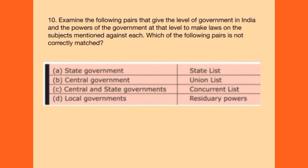Next question: which of the following pairs of level of government and its power to make laws is not correctly matched? State Government–State List is correctly matched. Central Government–Union List is correctly matched. Central and State Government–Concurrent List is correctly matched. But Local Government–Residuary Powers is not correctly matched, because residuary powers belong to the Central Government, not local government.